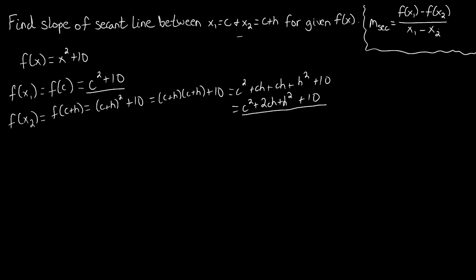We have our two x values, we have our two f of x values. Let's plug them into the slope of our secant formula and figure out what the slope of our secant line between these two points is. m secant is f of x1, we found to be c squared plus 10.